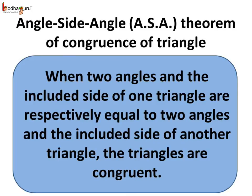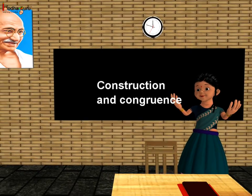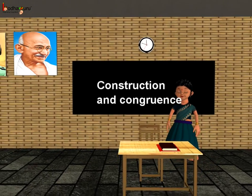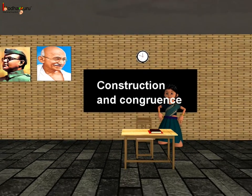When two angles and the included side of one triangle are respectively equal to the two angles and the included side of another triangle, the triangles are congruent. So that was all about congruency of triangles. Bye bye, children.